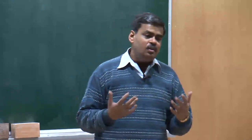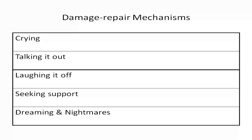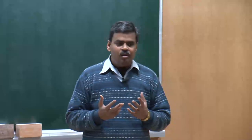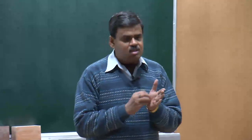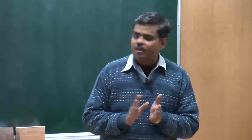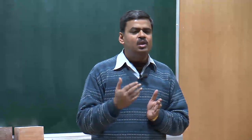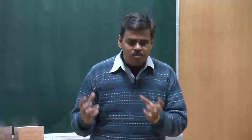We now come to another type of mechanism, what is called as damage repair mechanism. The guiding principle for the damage repair mechanism is that while executing a task in a given situation, your ego has been hurt. Now the insult that is created to the ego — there is an attempt to heal it. All these damage repair mechanisms are primarily intended to heal the wound that has been created to the ego.